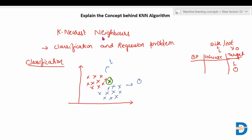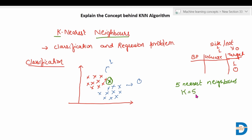How does KNN work? It works on the concept of neighbors. It will first find out what are its nearest neighbors. For example, we decide that we will rely on five nearest neighbors to determine our output — so K equals five. K is the number of nearest neighbors we are considering to find out the value of our new point. Based on five nearest neighbors, we have to find out if the person is sick or not.